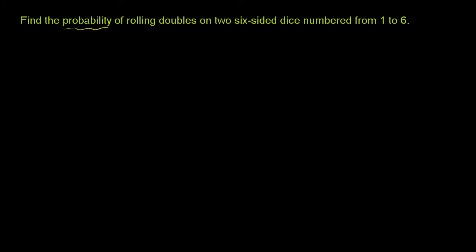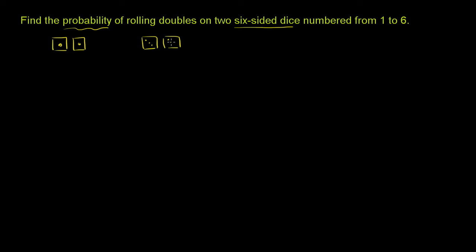Find the probability of rolling doubles on two six-sided dice. These are the regular types of dice you're used to playing with in Monopoly or any typical board game, numbered from 1 to 6. Doubles would be getting two 1s, or two 3s — getting the same number showing up on the top of both dice. That's what we need to figure out the probability of.